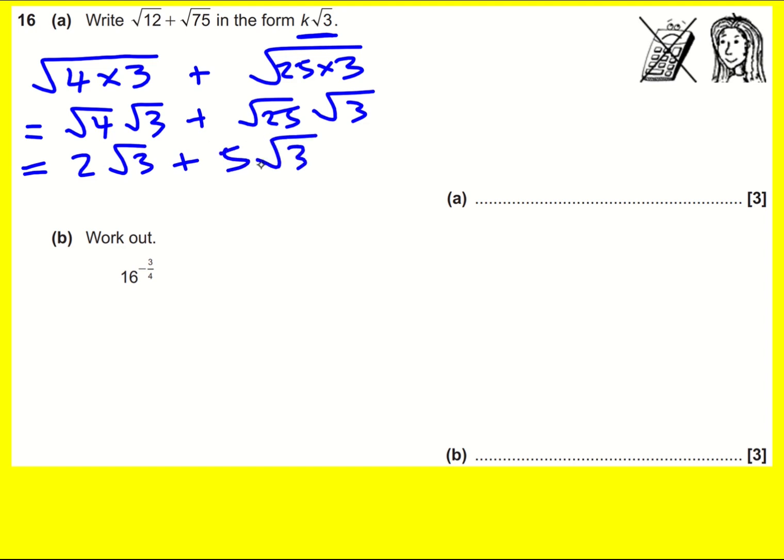Just like 2x + 5x is 7x, if x is √3 for example, then I've got 7√3.